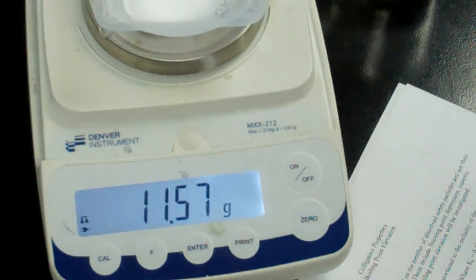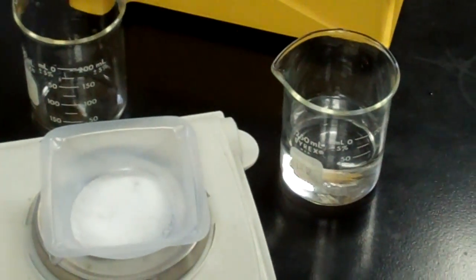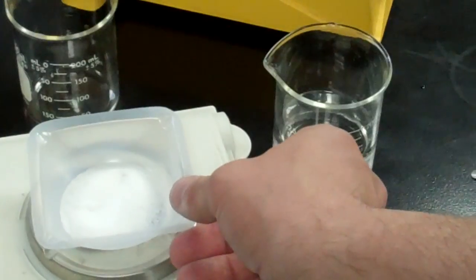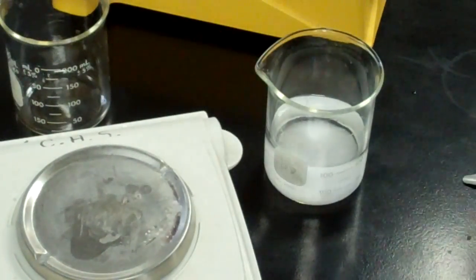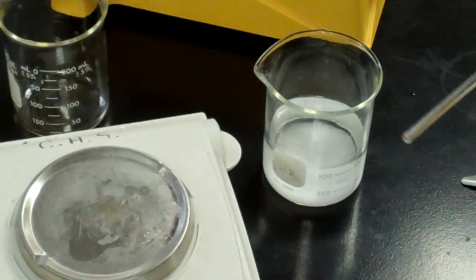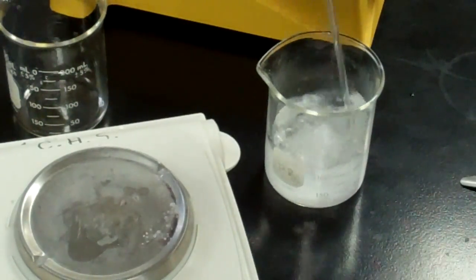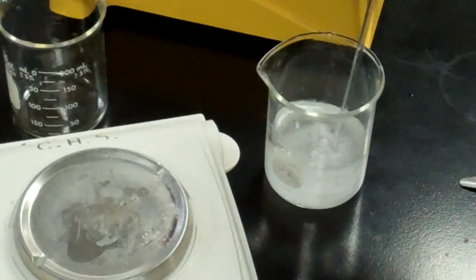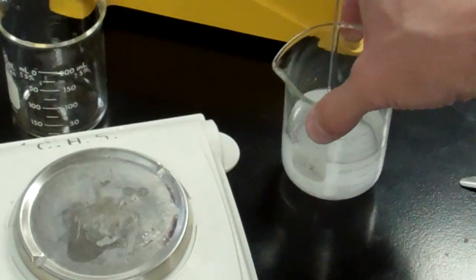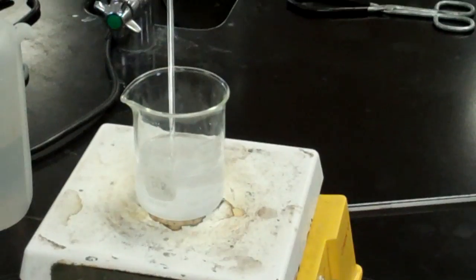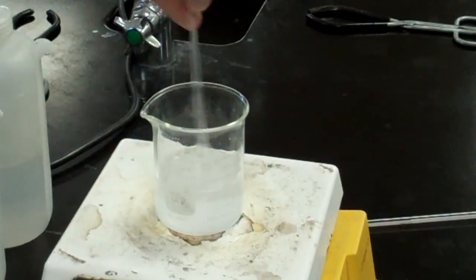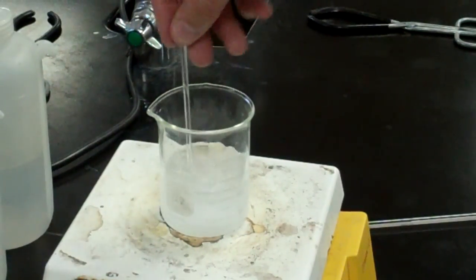And so that solute we will now place in our beaker of water. Remember this has 100 grams of water in it. Place the salt in there and we will get a stirring rod which has been provided for you as well and we will stir that so it goes into solution. It might not go into solution right away, in fact as you know heating it up should help the solvation process. So we will put that on our hot plate there and we will start heating it. All that salt will eventually go into solution.